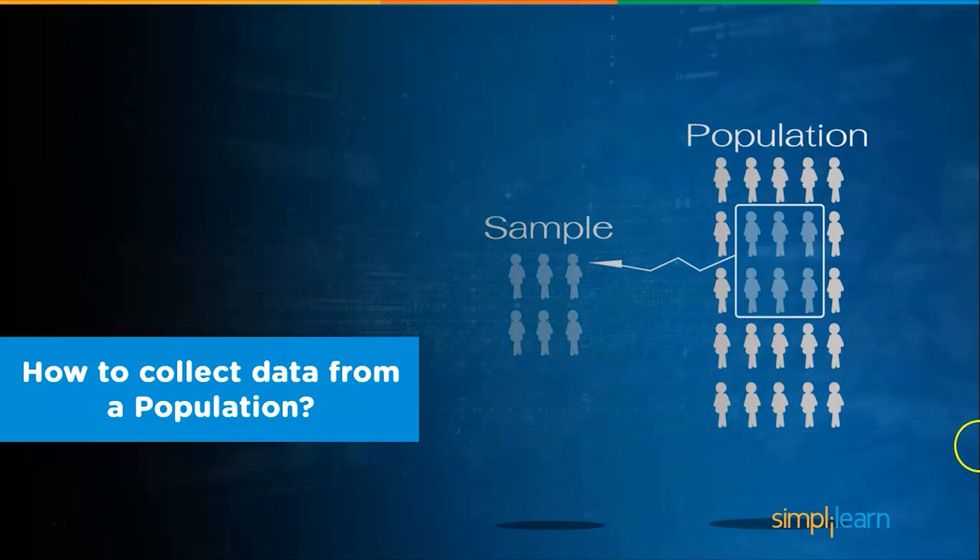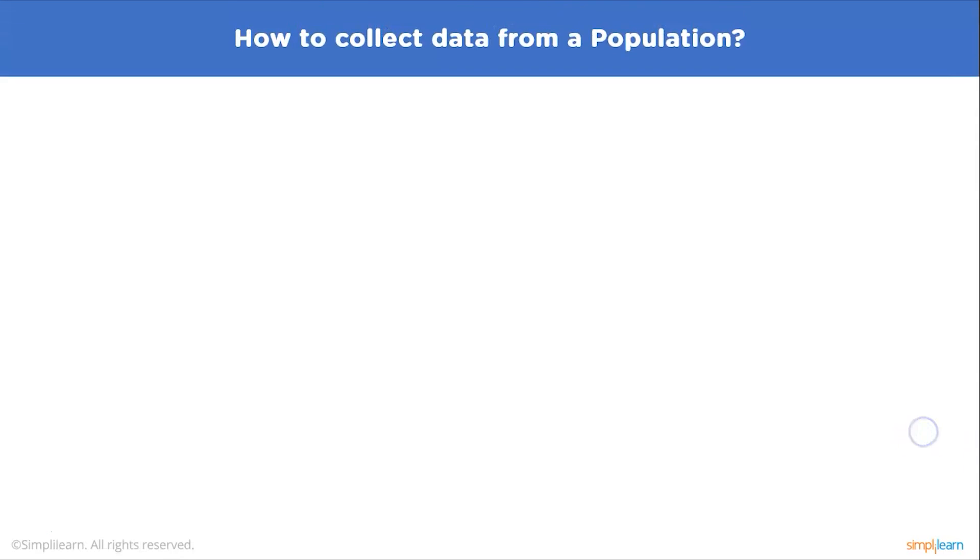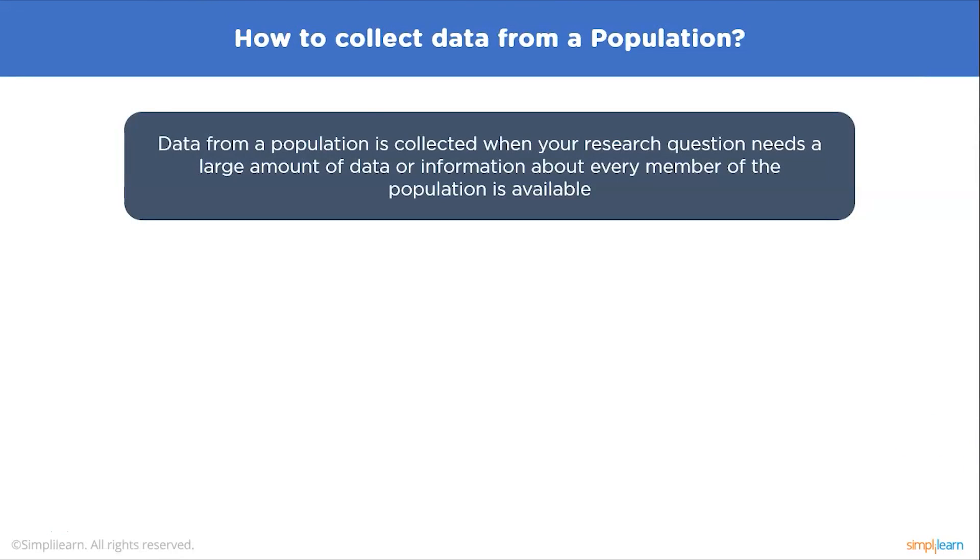Next, let's look at how to collect data from a population. Data from a population is collected when your research question needs a large amount of data or information about every member of the population is available. Populations are used when your research question requires or when you have access to data from every member of the population.